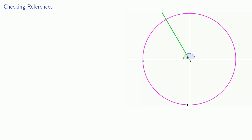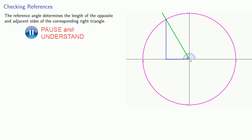We look for the right triangle. The important thing to remember is that the reference angle determines the length of the opposite and adjacent sides of the corresponding right triangle. So it determines the magnitude of the sine, cosine, and tangent.